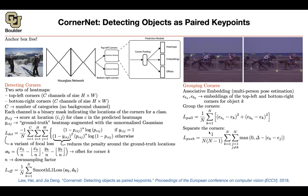Pulling alone gives a trivial solution — everything collapses to zero. You need a pull-and-push framework. The push loss tries to separate different centers from each other using a hinge loss: you minimize the loss when the distance between centers is greater than delta. This pushes different objects' embeddings apart by at least delta, where delta equals one (the margin).